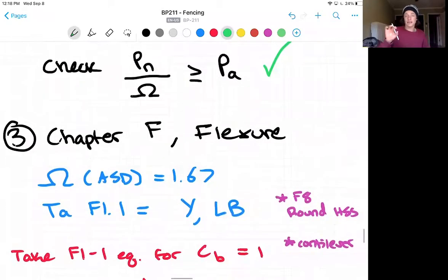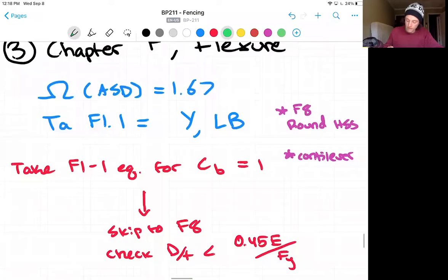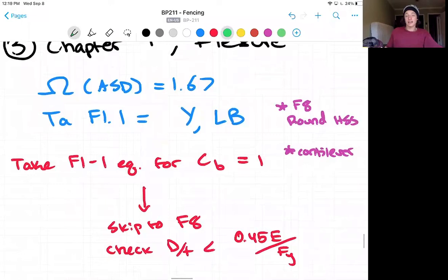Before we navigate into F8, we will look at the first equation F1-1 before we navigate into the specific sections. And that tells us we take CB equals 1 for a cantilever condition. Now we'll skip to F8, which first has us check again that our width to thickness ratio is less than 0.45 E over FY. And given our conditions, that should be the case.